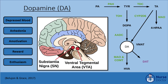One of the most notable effects of dopamine deficiency, apart from depressed mood, is anhedonia — the inability to experience pleasure from activities that are usually found to be enjoyable. Additional alterations that may be found with a dopamine deficiency occur in the domains of motivation, reward, enthusiasm, and self-confidence.